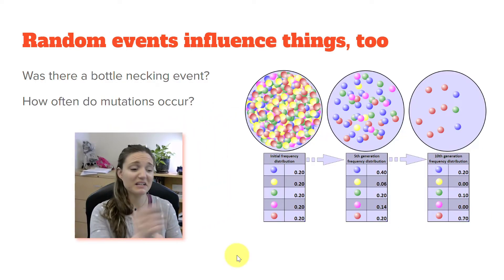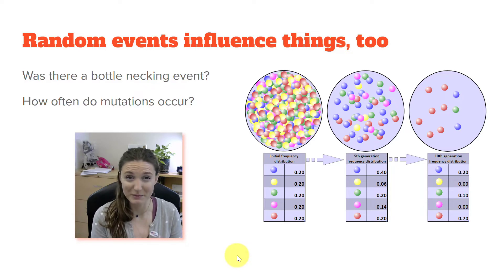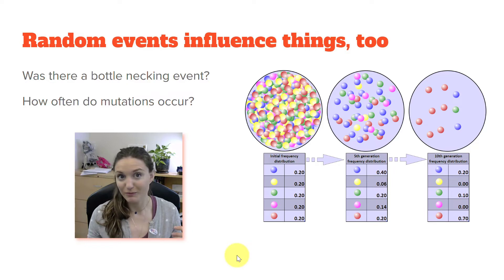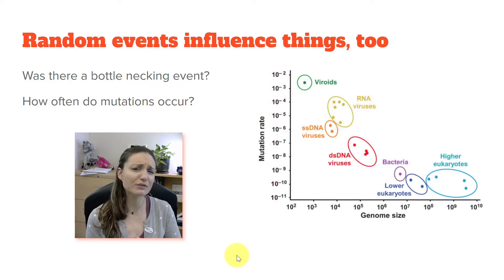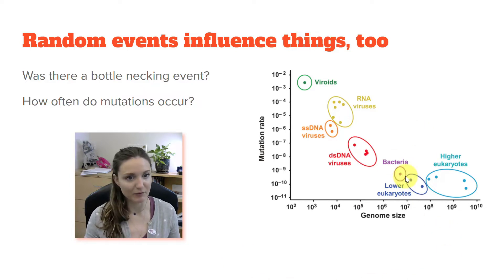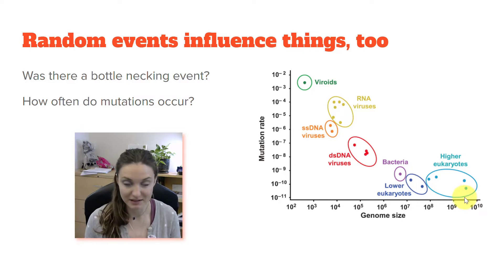Random events can come in and mix things up too. If there's a bottlenecking event and a population becomes smaller, they're more likely to be impacted by genetic drift — smaller populations are more likely to see changes in their genetic composition due to random events. Also, different species have different mutation rates. Something like bacteria have a much higher mutation rate than lower or higher eukaryotes. The more mutations arise in a population, the faster the process of speciation could occur.